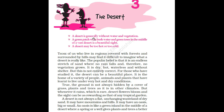A desert is generally without water and vegetation. Vegetation means the place where the plants grow. A green patch with fresh water and green trees in the middle of a vast desert is a beautiful sight. So a green patch means the area where we can find fresh water and some green trees — this patch is in the middle of the big desert which actually looks very beautiful. A desert may be too hot or too cold. Those of us who live in regions covered with forests and surrounded by hills may find it difficult to imagine what a desert is really like.